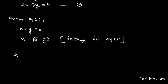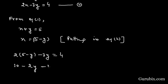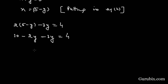Substituting into equation 2: 2(5 - y) - 3y = 4, which gives 10 - 2y - 3y = 4, so -5y = -6, meaning y = 6/5.